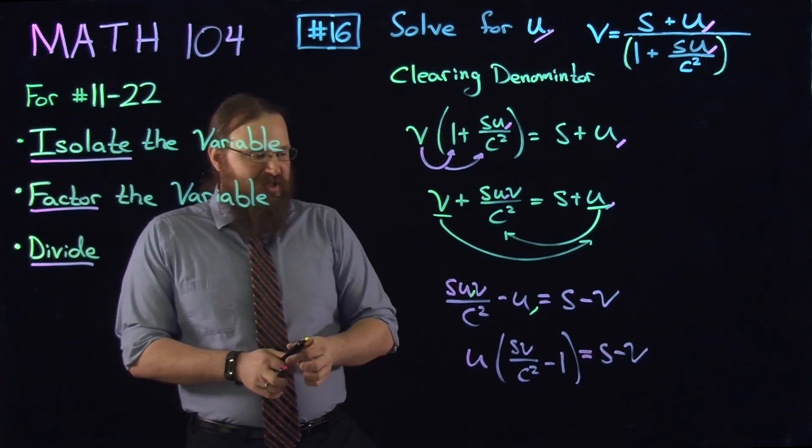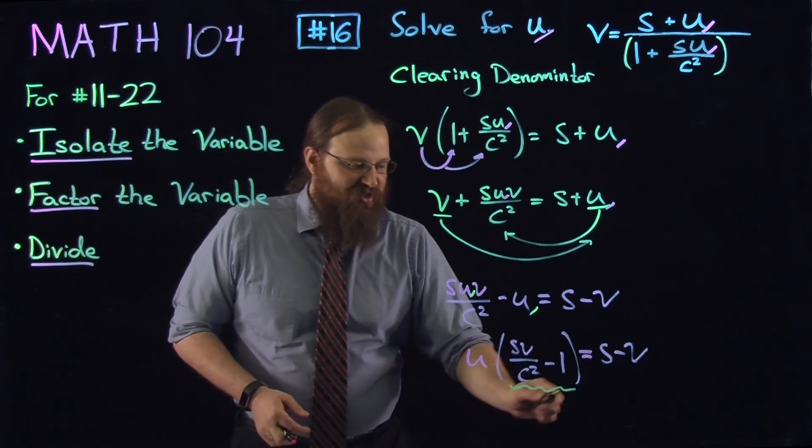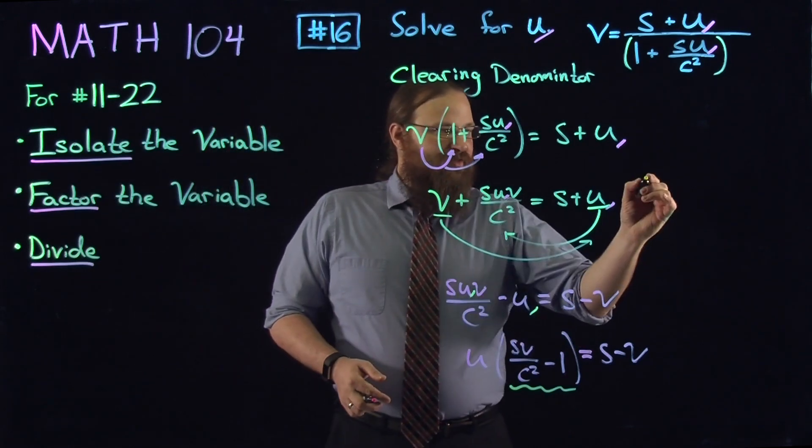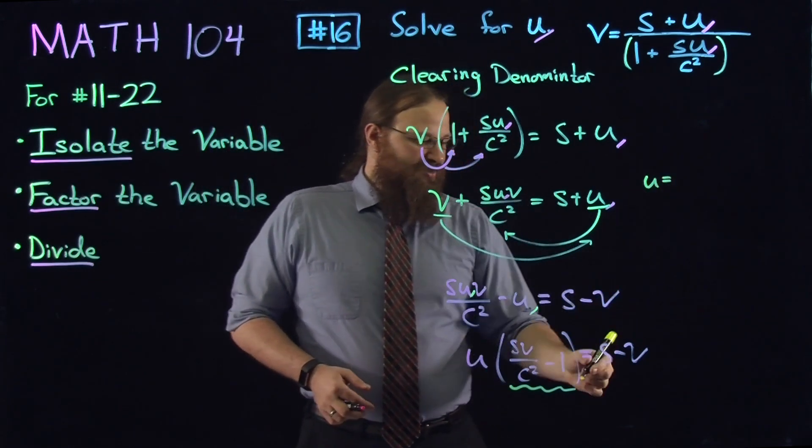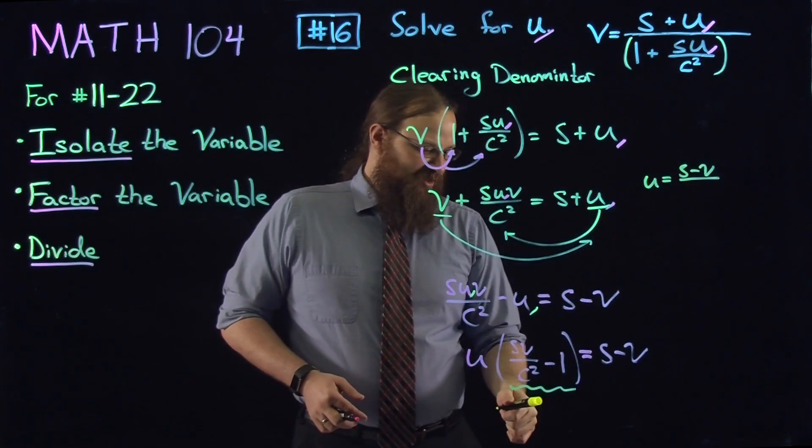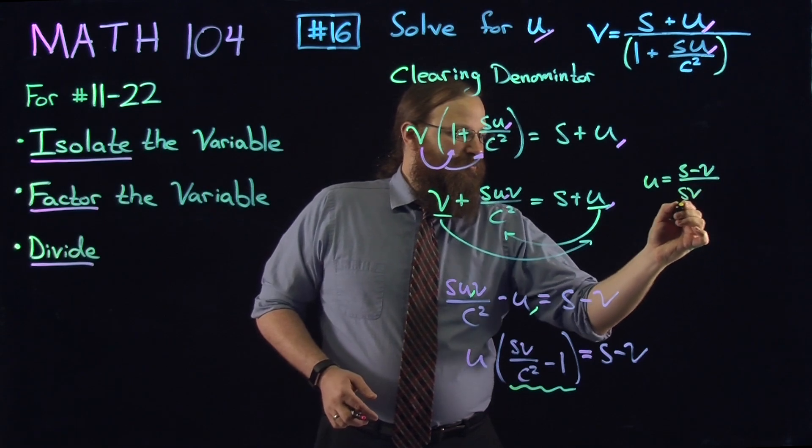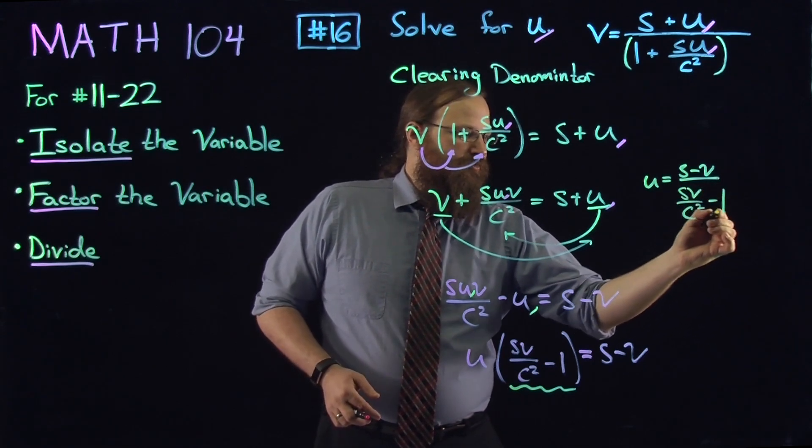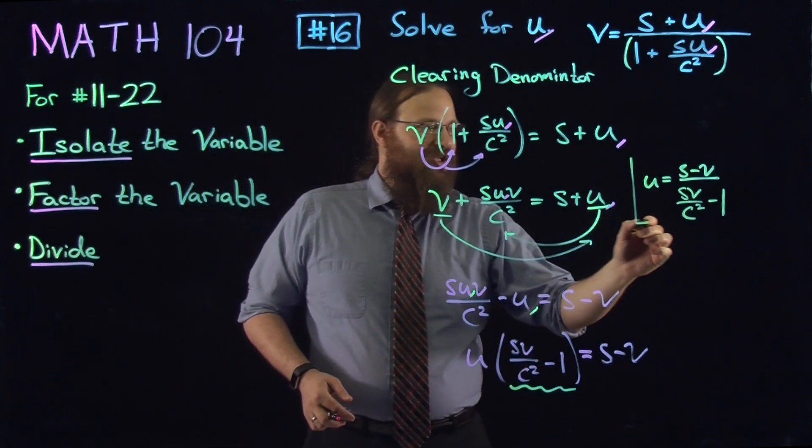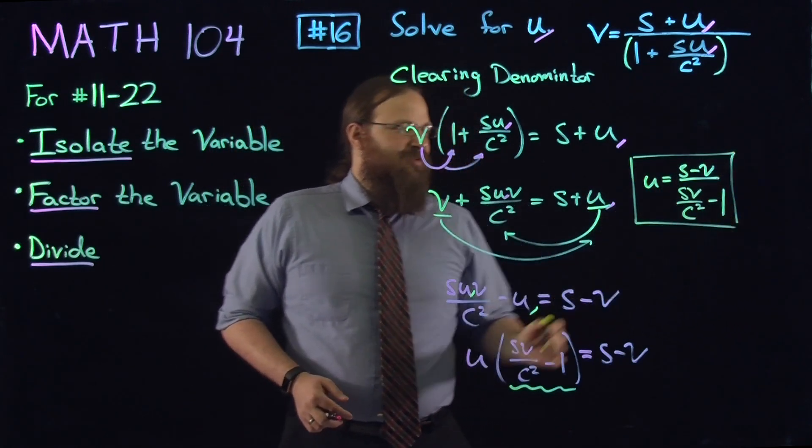So we have isolated, we have factored. Now we'll divide. We'll divide the factor that is not including u on the left-hand side, telling us that u is equal to the right-hand side divided by the piece that we just factored. There's no need to simplify here. You'll be plugging into the gateway this equation.